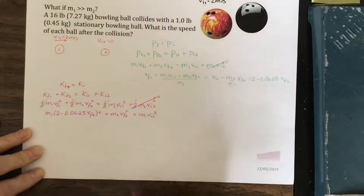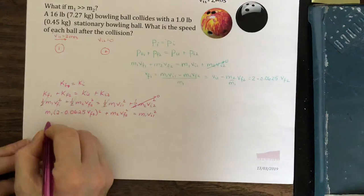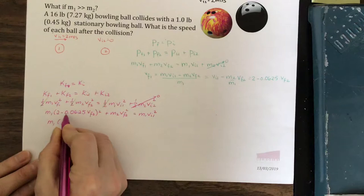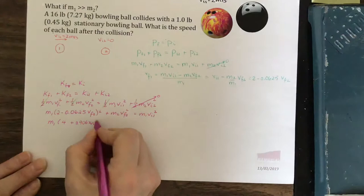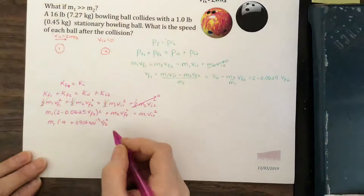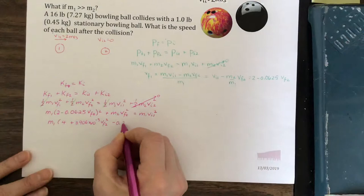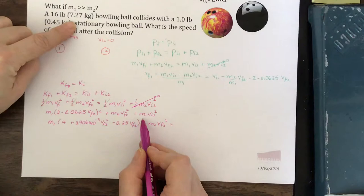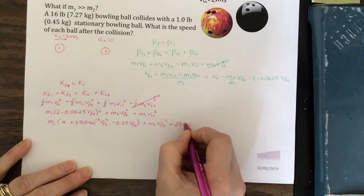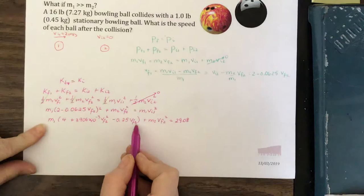Okay, let's multiply this term doing the FOIL method. So m1 2 times 2 gives us 4 minus 0.0625 vF squared gives us plus 3.906 times 10 to the minus 3 vF2 squared. Then we have 2 of this term, so we get minus 0.25 vF2 plus m2 vF2 squared equals m1 v1 squared. We can put in m1 is 7.27 kilograms, v1 is 2 meters per second, and we get 29.08 here.